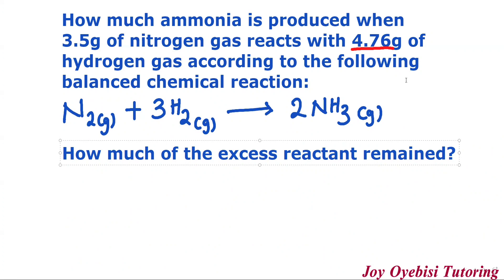The next question that comes under this is: how much of the excess reactant remained? We said nitrogen was our limiting reactant, giving us the smaller amount of ammonia, while the excess reactant is hydrogen. Remember, excess reactants are those that remain at the end of a reaction — we do not use them all up. How much of that 4.76 grams remained? Your limiting reactant limits everything that happens in that reaction, so we use the nitrogen value to do the calculation.